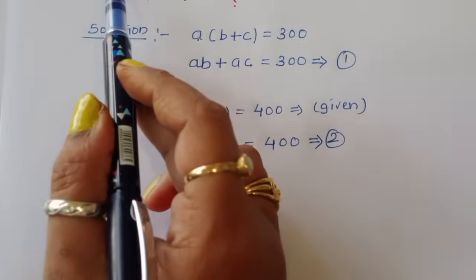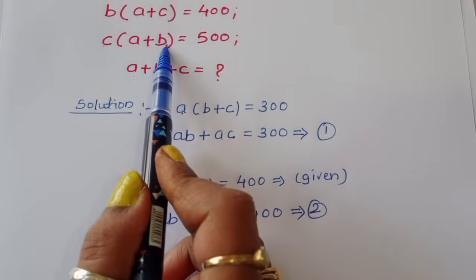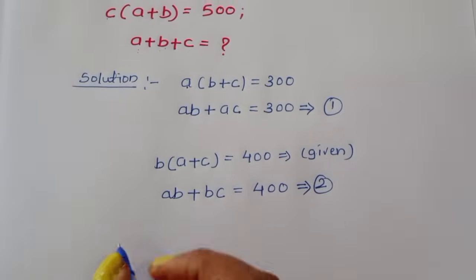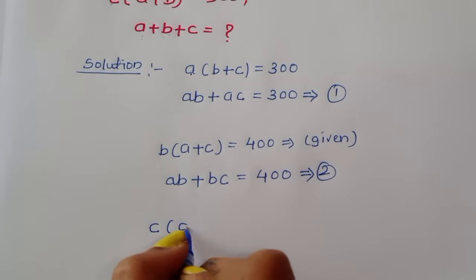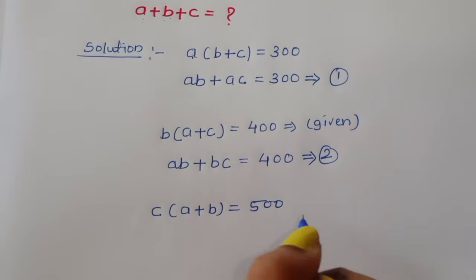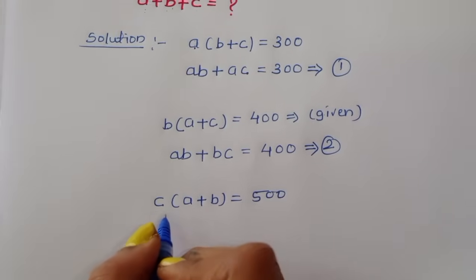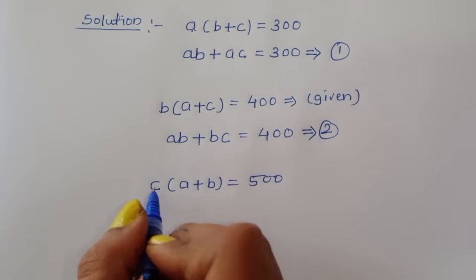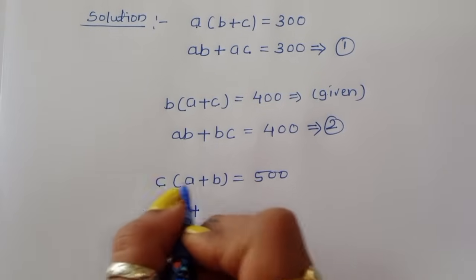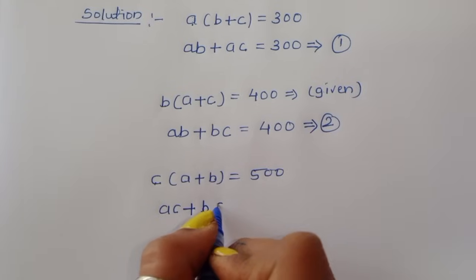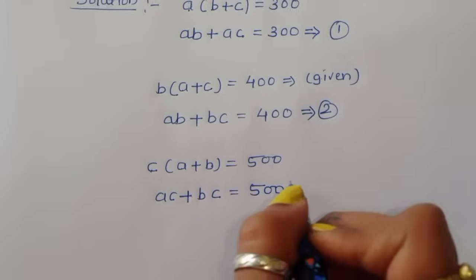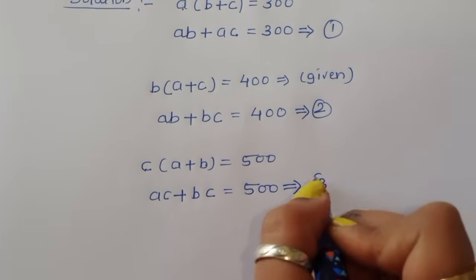The last one is C times (A plus B) is equal to 500. Expanding, AC plus BC is equal to 500. This is equation number 3.